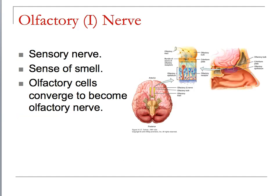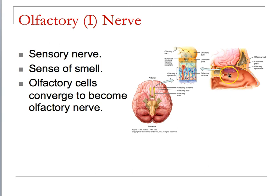The olfactory nerve is the special one because it does not travel to the thalamus. It detects materials because the receptors at the olfactory epithelium are constantly regenerating, depending on whatever chemical could actually activate them. You could pick up a flower anywhere in the world and your brain would be able to tell you what it smells like.